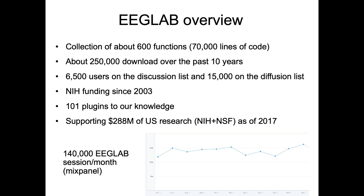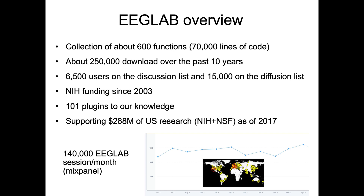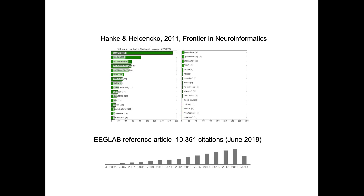This is calculated by looking at all the papers that use EEGLAB and totaling their grants. There are about 140,000 EEGLAB sessions per month from about 10,000 users from all over the world — mostly North America, Europe, and China and Asia. In 2011, there was a paper by Hanke and Elchenko showing that EEGLAB was the most used software for processing EEG data. The EEGLAB reference article is above 10,000 citations as of 2019 and seems to still increase.